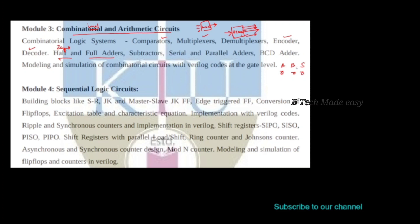A full adder has three inputs. If inputs are 0, 0, and a carry-in, we compute the sum. A half adder has two inputs; a full adder has three inputs including a carry-in bit.